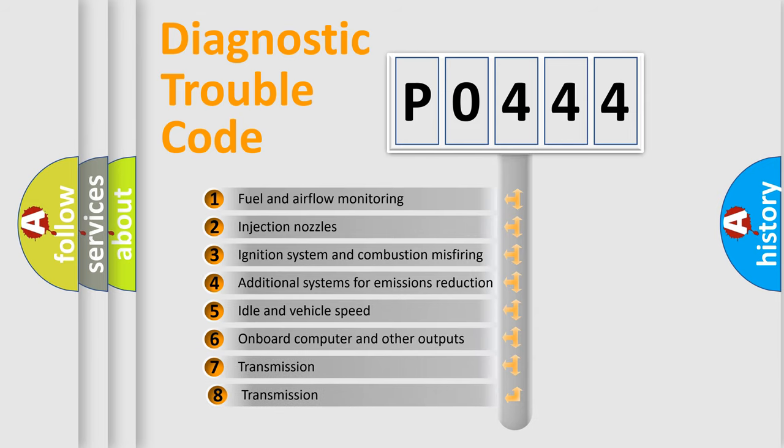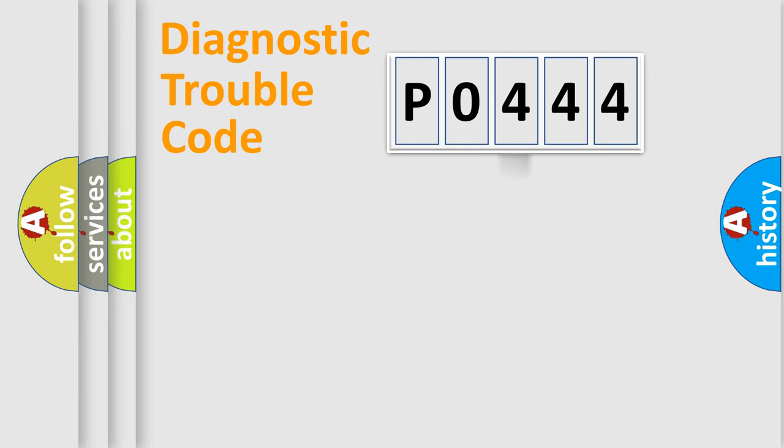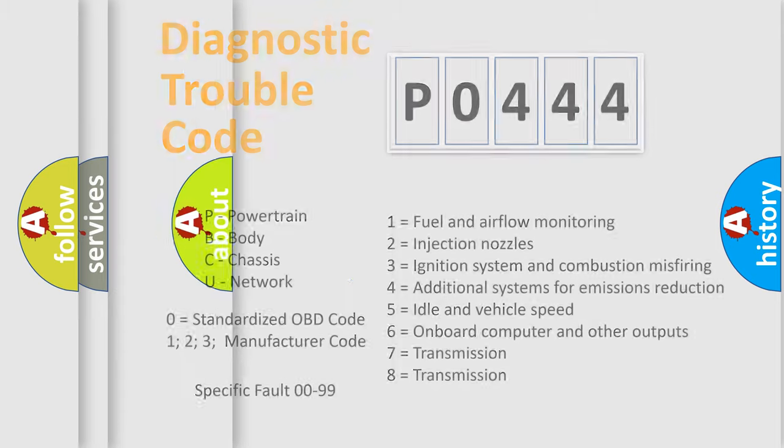The third character specifies a subset of errors. The distribution shown is valid only for the standardized DTC code. Only the last two characters define the specific fault of the group. Let's not forget that such a division is valid only if the second character code is expressed by the number zero.